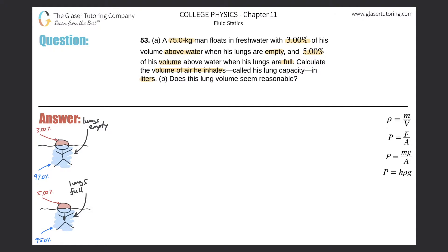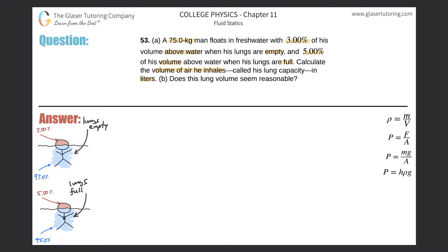On a problem like this, first we can take a look at these two pictures. In the first case where his lungs are empty, 3% of his body volume is above water, therefore 97% is below. When his lungs are full, 5% is above and 95% is below.